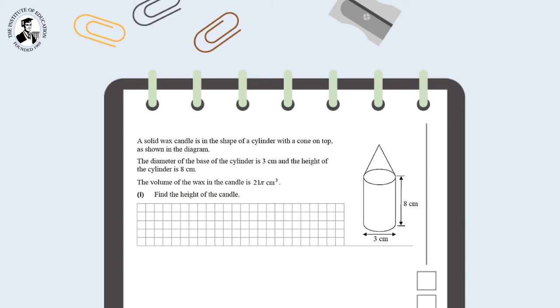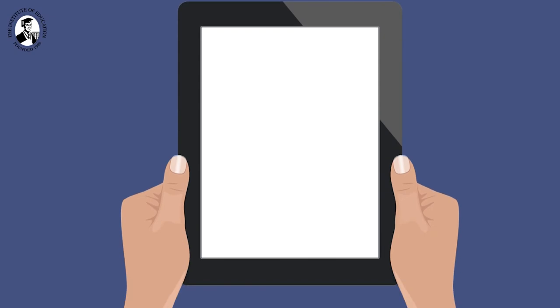Secondly, the diameter should then be halved to give a radius of 1.5cm and this will be used in all calculations going forward. Thirdly, the overall height of the candle is the 8cm added to the unknown height of the cone. We must find this dimension or length if we are to answer the question successfully.